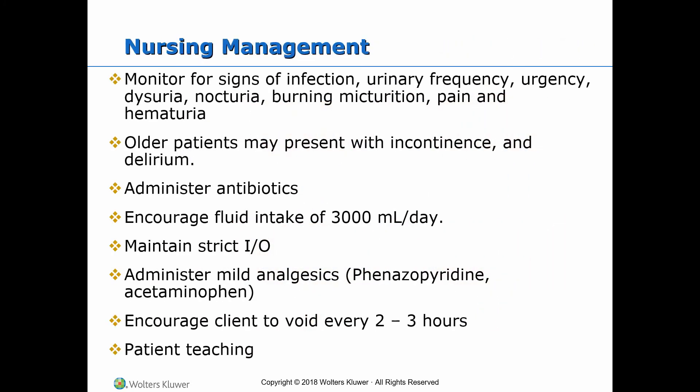Nursing management: monitor for signs of infection including fever, chills, and leukocytosis. Monitor for urinary frequency, urgency, dysuria, nocturia, burning micturition, suprapubic or pelvic pain, and hematuria. Upper UTI is usually associated with fever, chills, and flank pain or costovertebral pain.